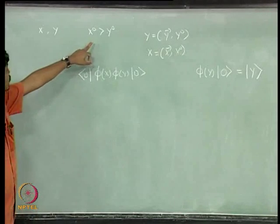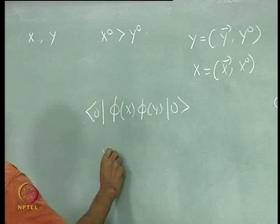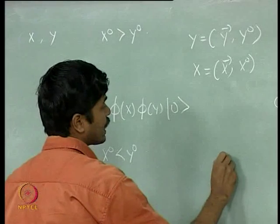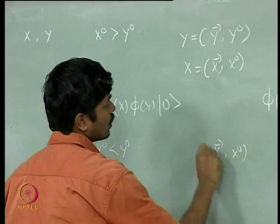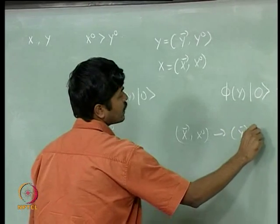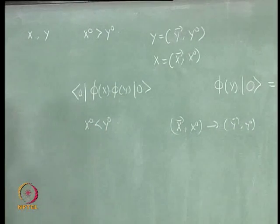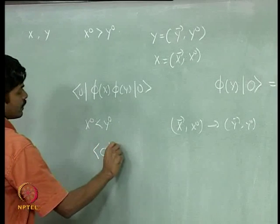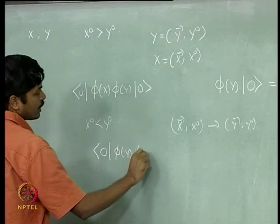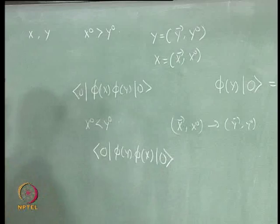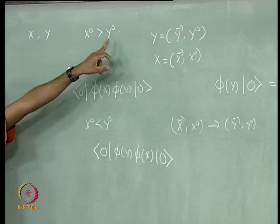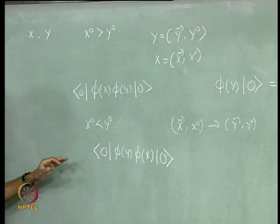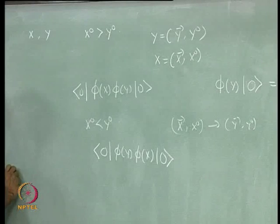Similarly, if instead x_0 is less than y_0, then you can talk about propagation of the particle from x at x_0 to y at y_0. The amplitude for propagation in this case is going to be the vacuum expectation value of phi(y) phi(x). So instead of talking about whether x_0 is greater or less than y_0, we can put the entire thing together by introducing what is known as time ordering.